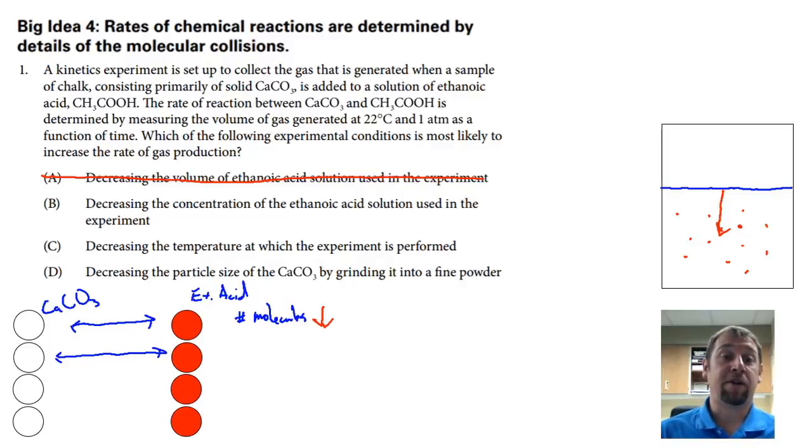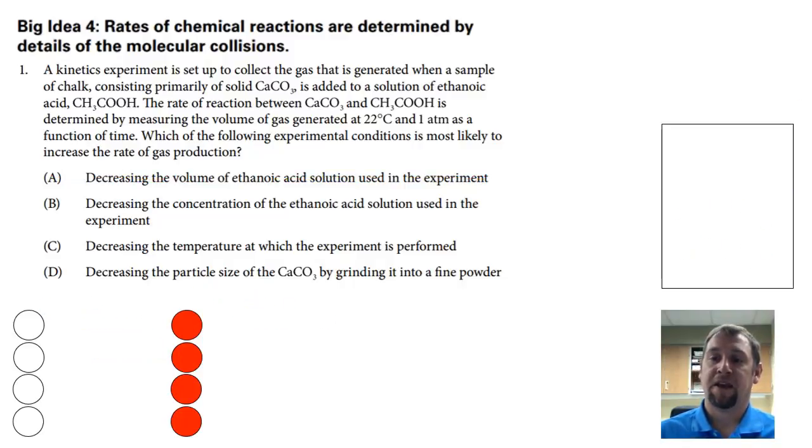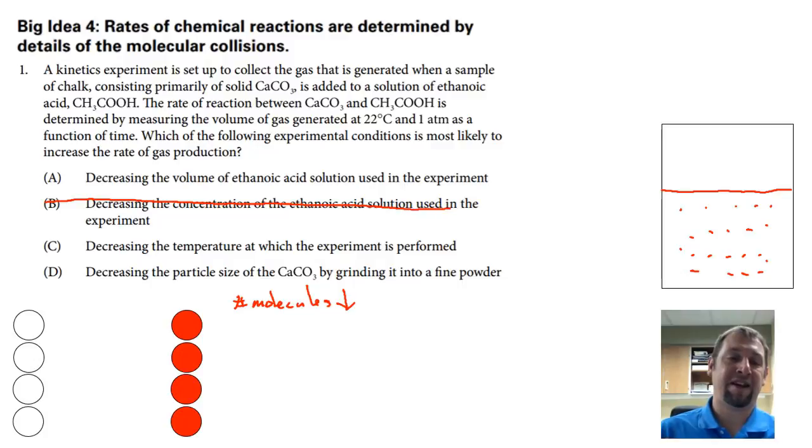Choice B, decreasing the concentration of the ethanoic acid. Let me get rid of some of these annotations here. If we decrease the concentration, what does that mean? We have a certain number of molecules in here and by decreasing it we're actually decreasing that number of molecules. That will not increase the rate of the reaction in any case. So choices A and B are already gone.